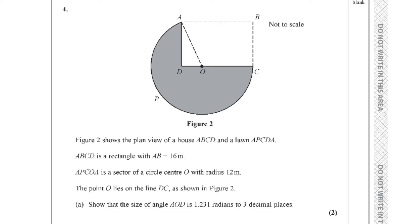Question number four. We are given a diagram and it says the figure shows the plan of a house. ABCD and a lawn APCDA. ABCD is a rectangle. Only one measurement is given — the length AB is 16 meters. APCO is a sector of a circle with center O, and the radius is 12 meters. The point O lies on the line DC.